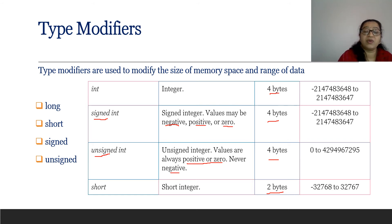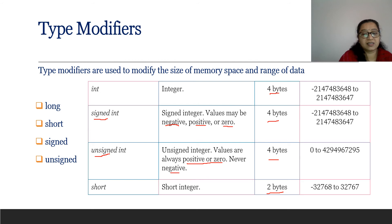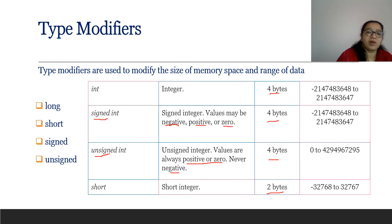If you want to store a negative 50,000 value, short cannot hold it — we need int or signed int. The four modifiers are long, short, signed, and unsigned. Long int has the same capacity as int — no change. These modifiers can also be applied to char and float data types.